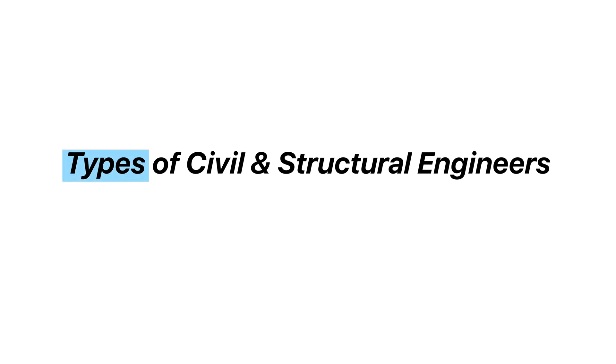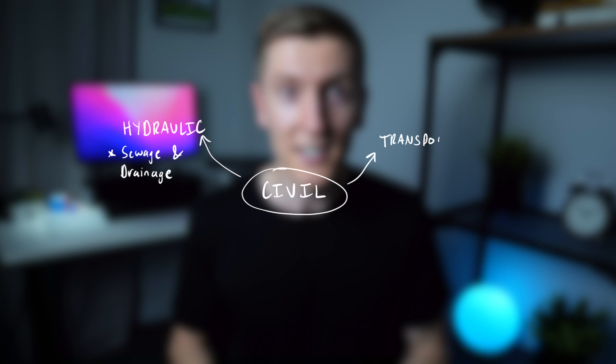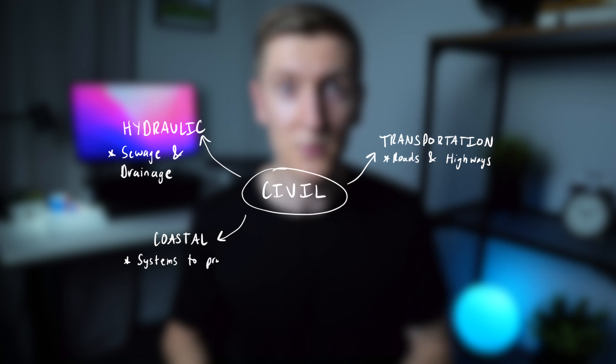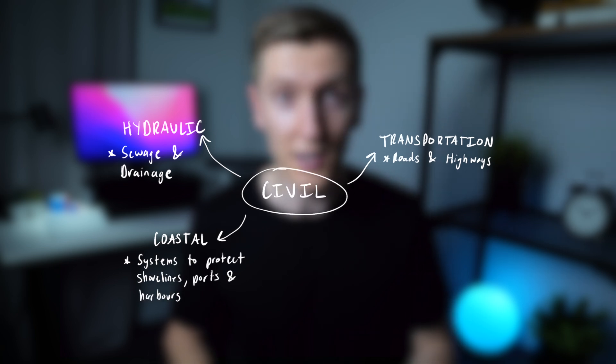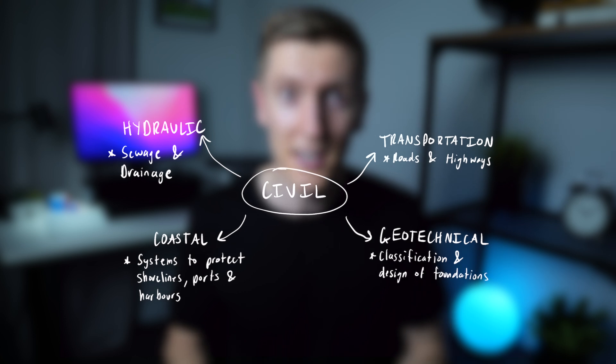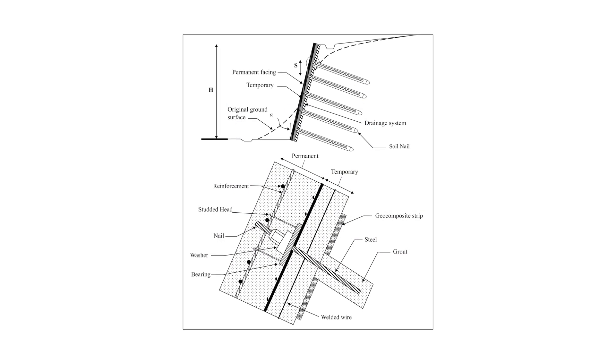Lastly, let's go over some of the different types of civil engineers and structural engineers. For civil engineering, we have hydraulic engineers who focus on sewerage and drainage design; transportation engineers who focus on road and highway design; coastal engineers who design systems to protect shorelines, ports and harbours from erosion, flooding and storms; and geotechnical engineers who focus on the classification and design of foundations, and also get involved in geotechnical design elements like piles and various retention systems.